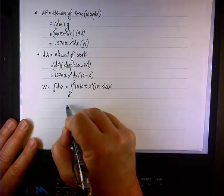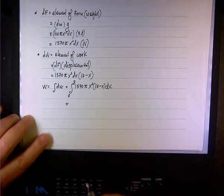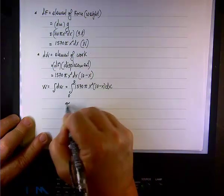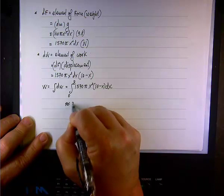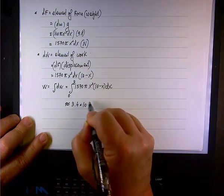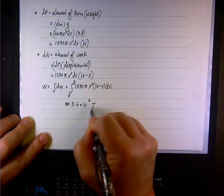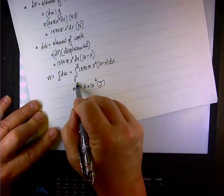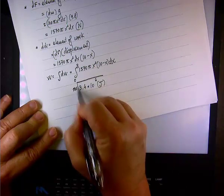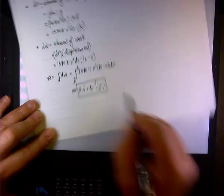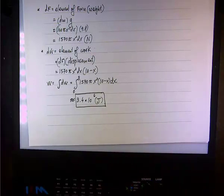And for those of you who need to have a number at the end of the road, the result of the calculation will be, if I'll approximate it, it will be 3.4 times 10 to the 6 joules.